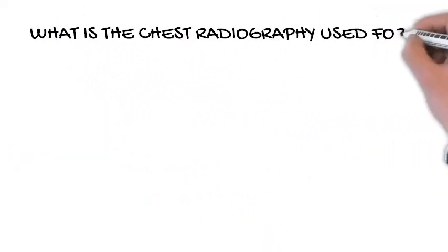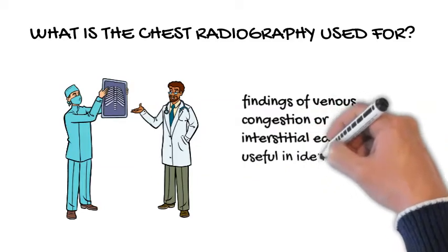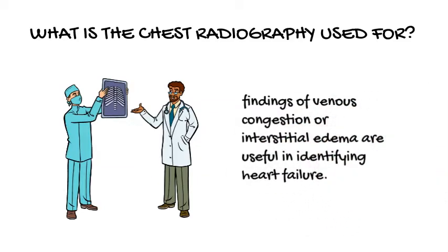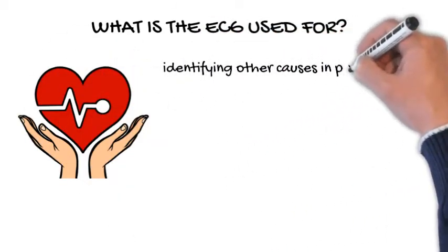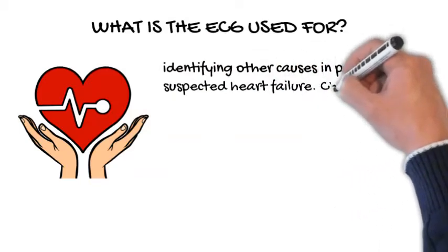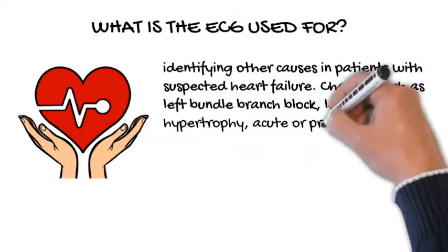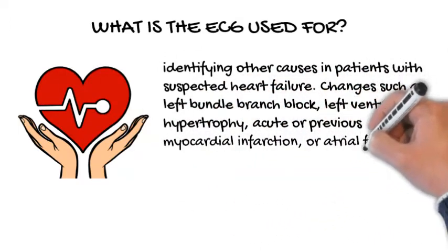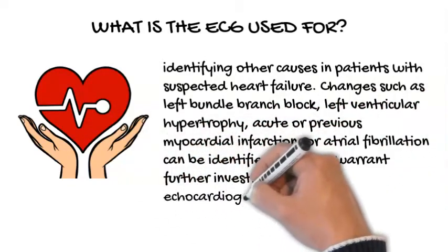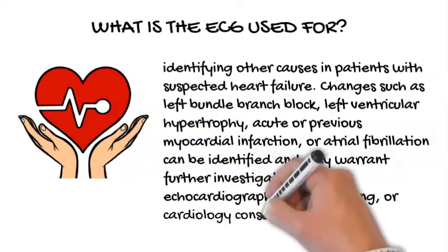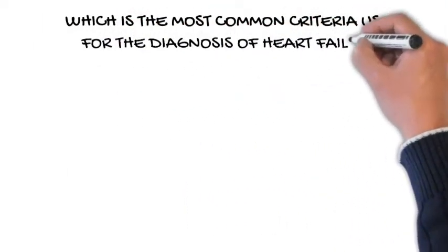What is chest radiography used for? Chest radiography findings of venous congestion or interstitial edema are useful in identifying heart failure. What is the ECG used for? Electrocardiography is useful for identifying other causes in patients with suspected heart failure. Changes such as left bundle branch block, left ventricular hypertrophy, acute or previous myocardial infarction, or atrial fibrillation can be identified and may warrant further investigation by echocardiography, stress testing, or cardiology consultation.